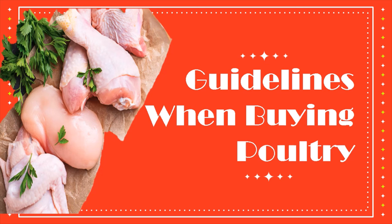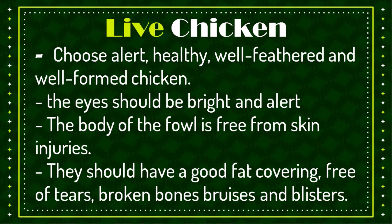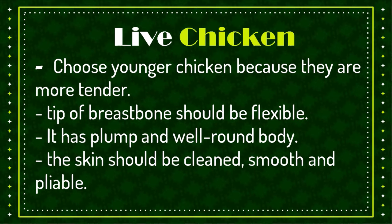Guidelines when buying poultry. In choosing live chicken, choose alert, healthy, well-feathered, and well-formed chicken. The eyes should be bright and alert. The body of the fowl should be free from skin injuries. They should have a good fat covering, free of tears, broken bones, bruises, and blisters. Choose younger chicken because they are more tender, but take note that older chicken have a better flavor. The tip of the breastbone should be flexible. It should have a plump and well-rounded body. The skin should be clean, smooth, and pliable.